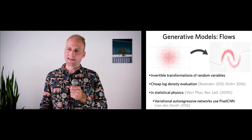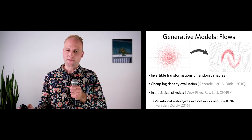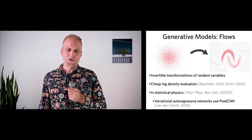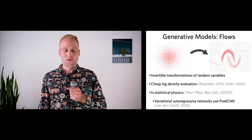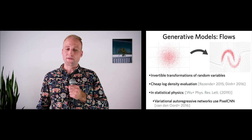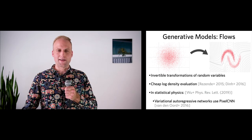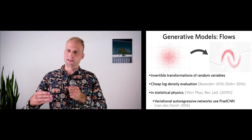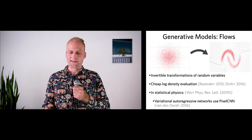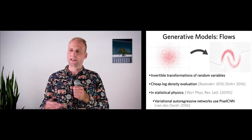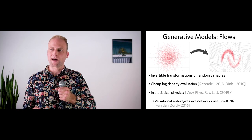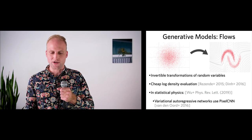In statistical physics, these models are starting to be used, as in a great Physical Review Letters paper from 2019 where Wu et al. used variational autoregressive networks — convolutional neural networks that build on normalizing flows and get very good performance in statistical physics tasks. This is what we'll be comparing against once we see how to build hierarchical variational models using normalizing flows.